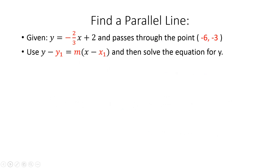The first problem is to find the line that's parallel to the given line y equals negative two-thirds x plus 2, passing through the point negative 6, negative 3. Since the equation is in slope-intercept form, I can easily identify my slope: the slope is negative two-thirds. Now that I know m is negative two-thirds and I know my given point, I can plug that information into the point-slope equation and solve for y to get a parallel line.